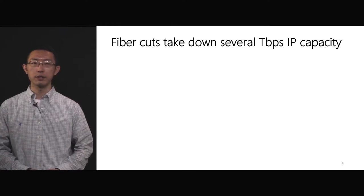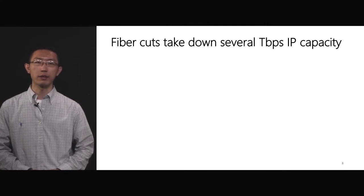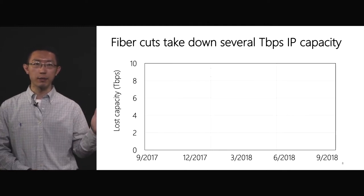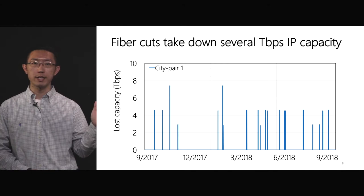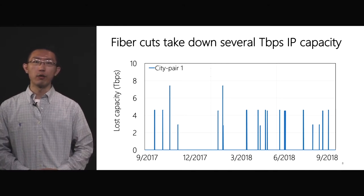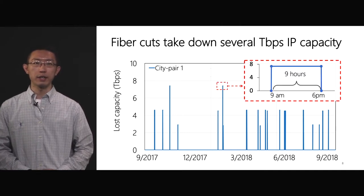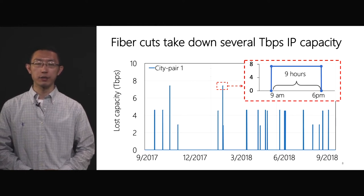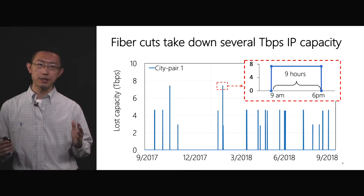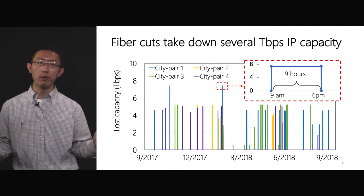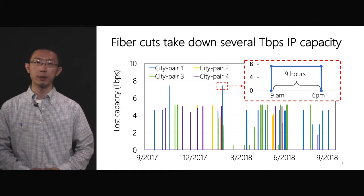How severe are fiber cuts? To quantitatively answer this question, we study the impact of fiber cuts on a global scale WAN. This figure shows the time on the x-axis and lost capacity on the y-axis. Each peak in this figure represents a fiber cut event. For our city pair, we observe that fiber cut events happen almost every month. If we zoom into one event, approximately 8 terabit per second capacity is lost for 9 hours until the fiber is repaired. This is a massive loss for the IP layer capacity. If we consider more city pairs in the network, we find fiber cuts take down several terabit per second capacity quite often.